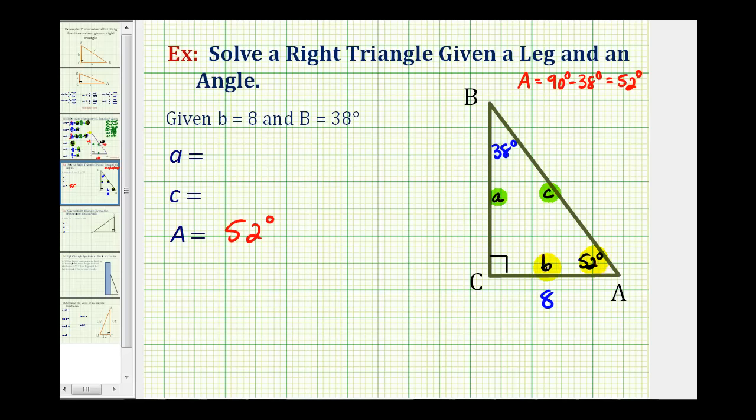We know we also have to use the length of side B, because we can only have one unknown in our equation. So if we want to use this angle and this side, let's say we want to find the length of side C.